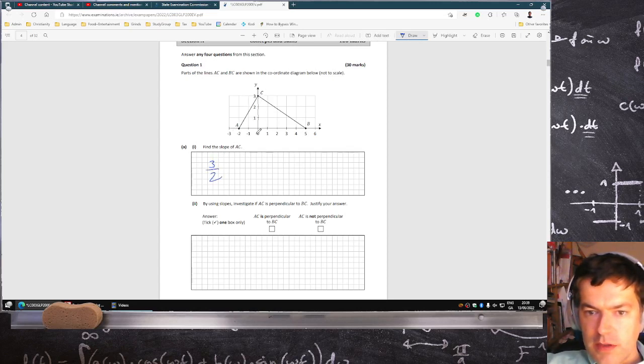AC, rise over run. By using slopes, investigate if it's perpendicular. The slope of this one here, if you call that one M1, the slope of the second line is negative 3 over... 1, 2, 3, 4, 5.